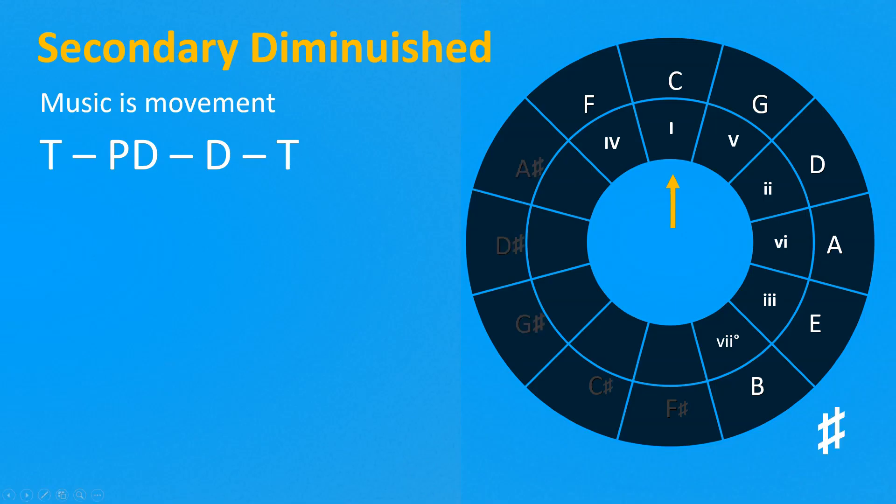The fifth is a dominant chord. So, are there any other dominant chords in addition to the fifth? Yes, the seventh diminished.